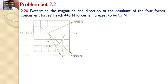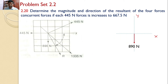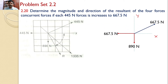To solve this problem, let us transfer all these forces onto the XY axis. Let us draw our XY axis — this is my X axis and this is my Y axis. I am transferring all four forces onto this XY plane. First, the 819 Newtons force transferred, which acts vertically downwards. The next force is 667.5 Newtons acting towards the left along the X axis. Then 667.5 Newtons as an inclined force, and the last one is 1335 Newtons, also an inclined force.